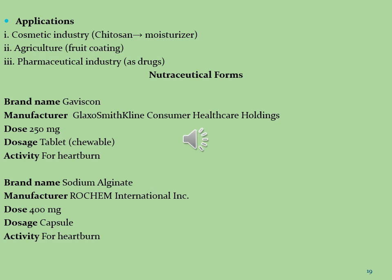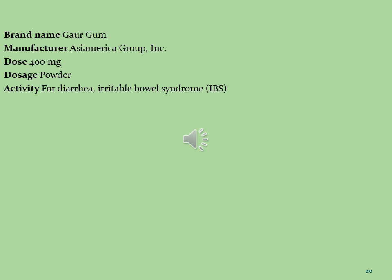Pharmaceutical brands using carbohydrate phytoconstituents as active sources: the first product is Gaviscon, a famous brand of GlaxoSmithKline Consumer Healthcare, dose 250 mg per day in chewable tablet form, used for heartburn. The second product is Sodium Alginate, manufactured by Rocam International Nutraceuticals, dose 400 mg per day in capsule form, also used for heartburn. The third product is Guar Gum, manufactured by Asia America Group Industries, dose 400 mg per day in powder sachet form, used for diarrhea and irritable bowel syndrome.